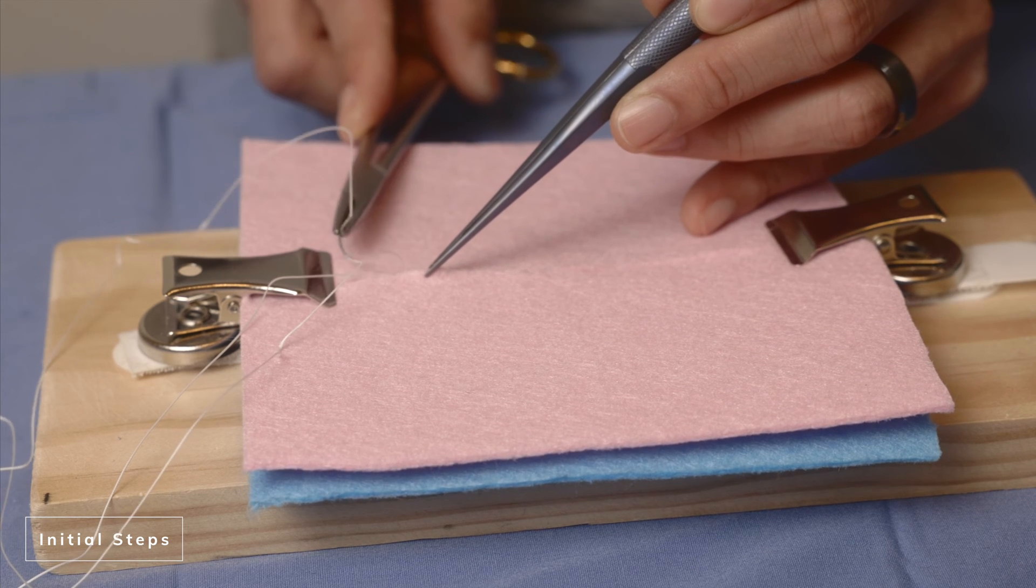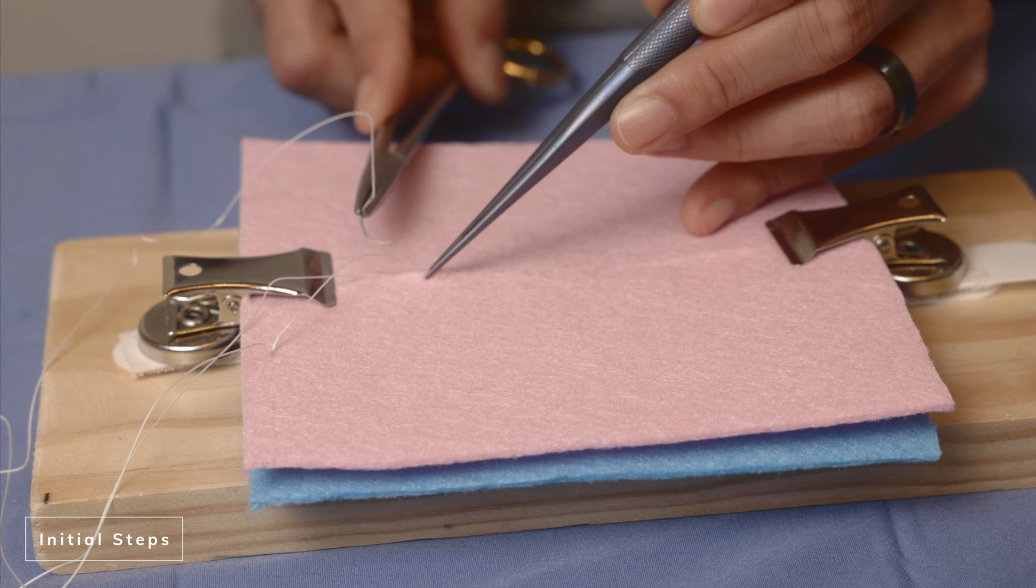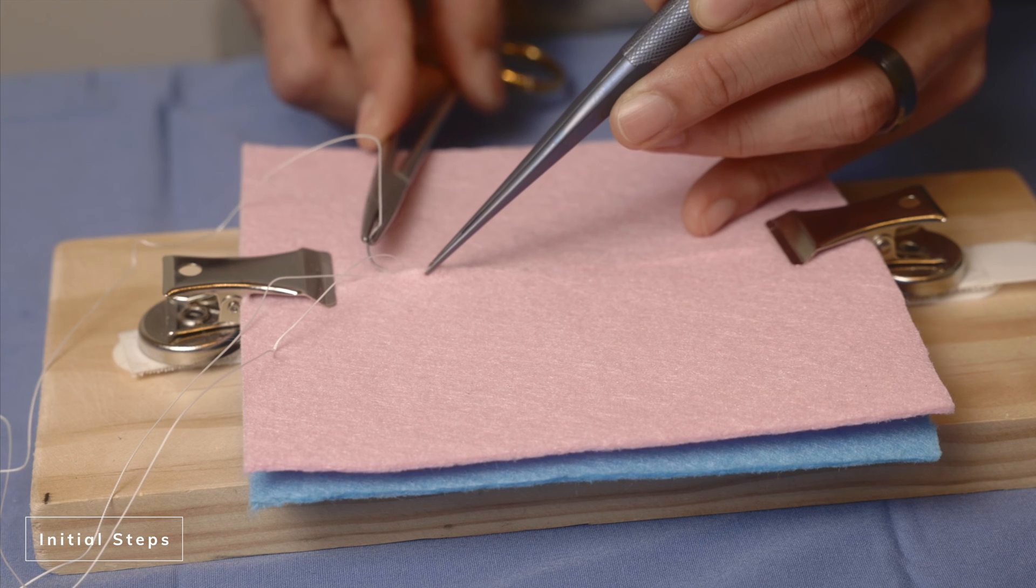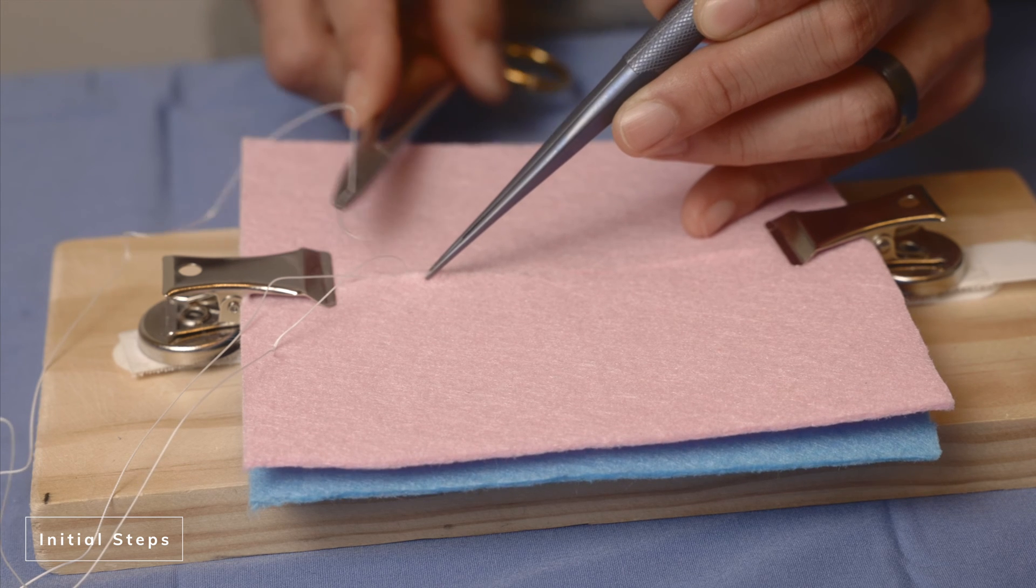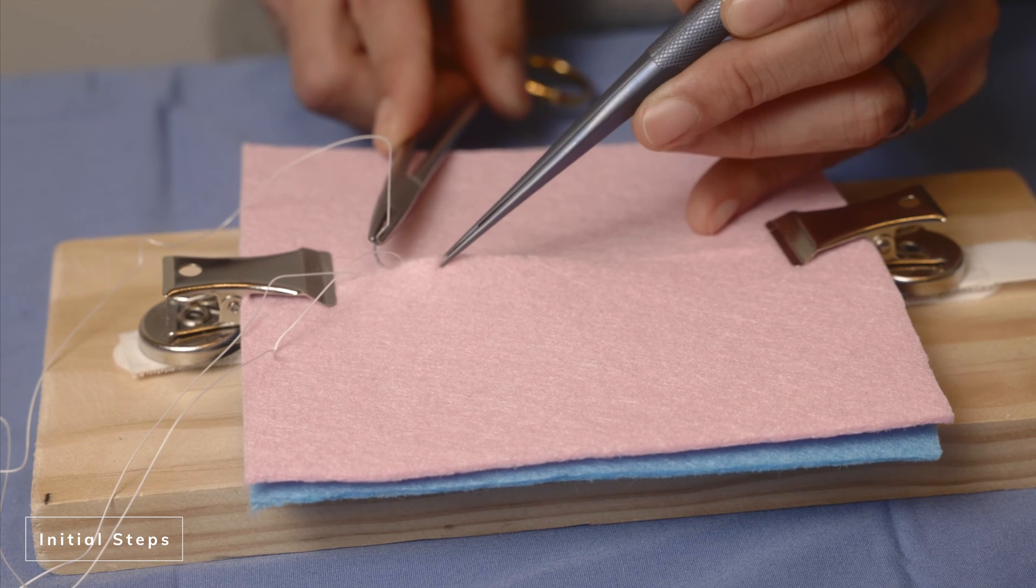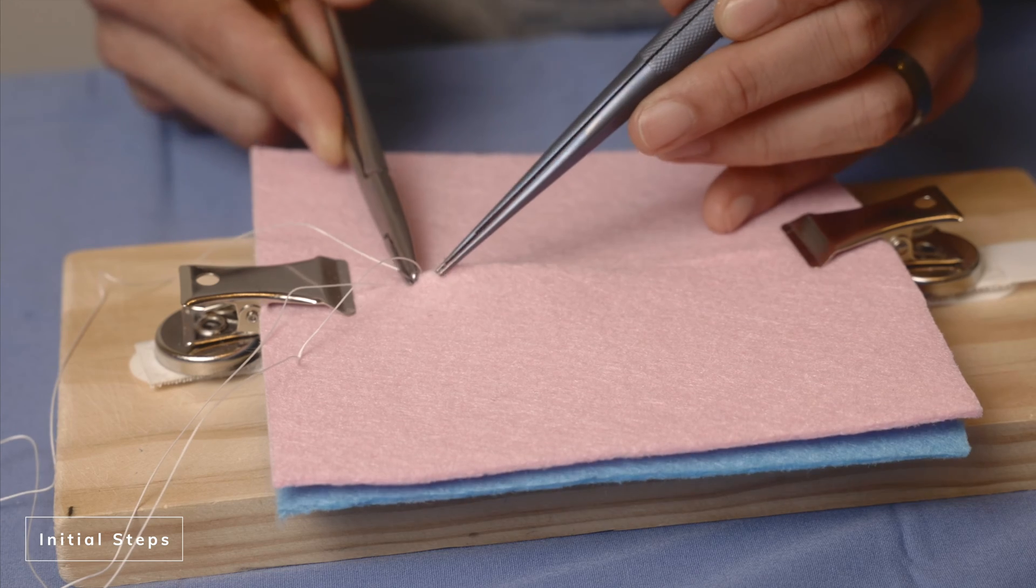So after I've come out from this side, I go across to the other side. Now the needle has to enter the other side at about the same location where you came out on the other side, on the first side. So I'm going to go across to the other side, do the same thing that I did, where I run the needle through the layer of the skin.